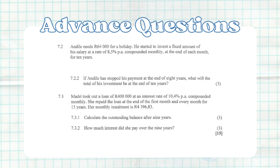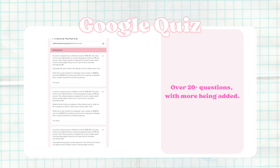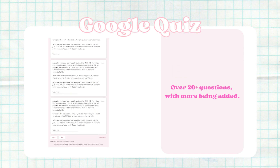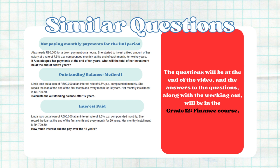Now we're going to move to part two, which is the advanced questions. We're going to do 7.2.2 then the whole of 7.3. Below is going to be a quiz of the questions that fall under this section — advanced equations. If you finish this video and do the advanced section, you might find a similar question that looks like 7.2.2 and also 7.3.